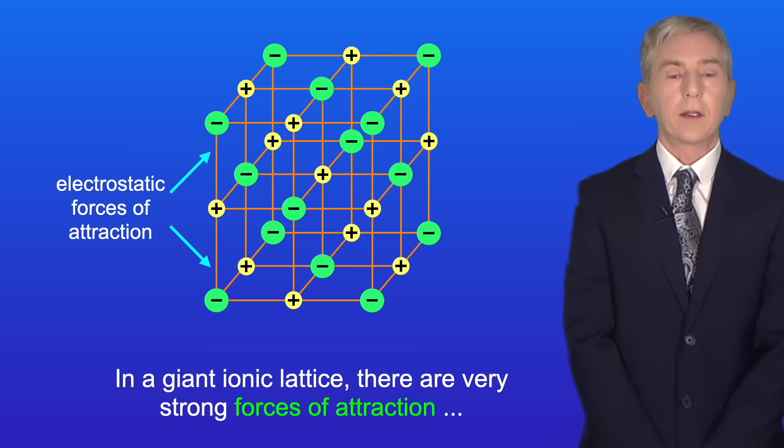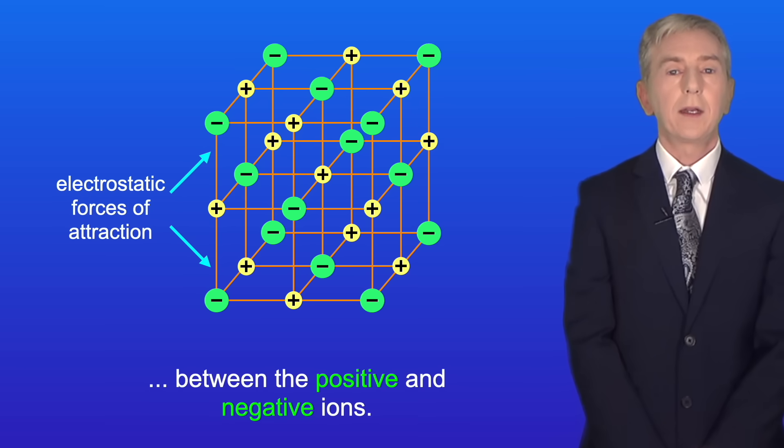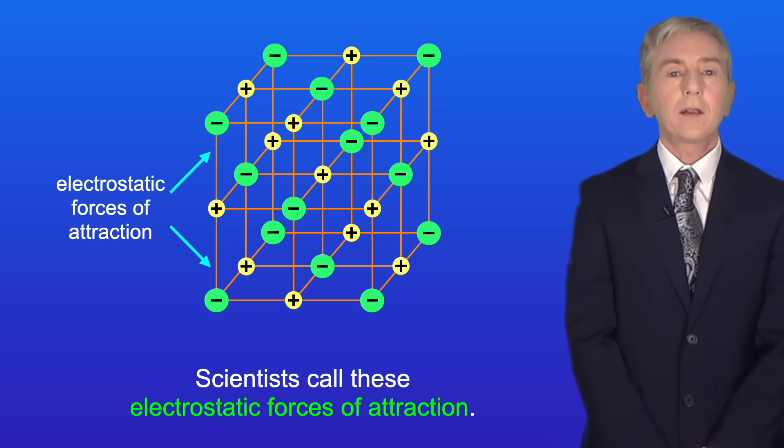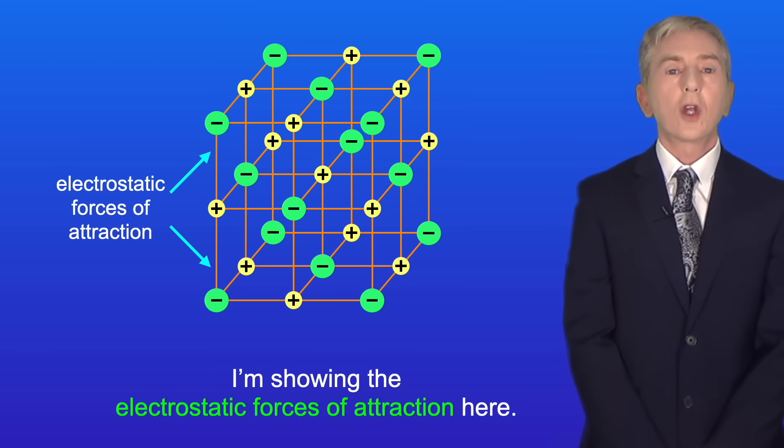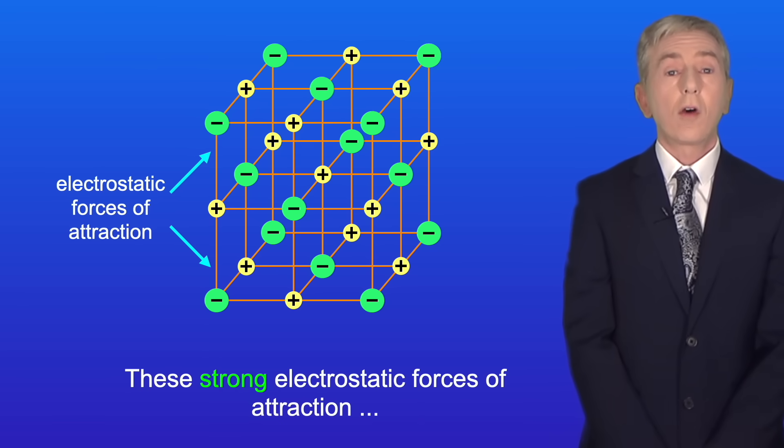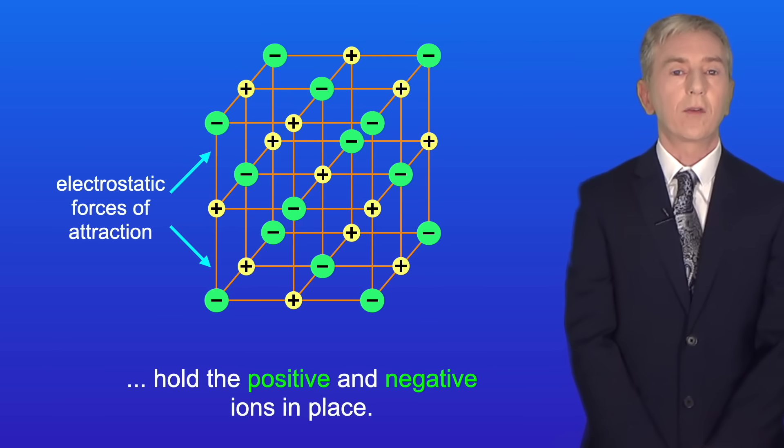In a giant ionic lattice, there are very strong forces of attraction between the positive and negative ions. Scientists call these electrostatic forces of attraction, and I'm showing the electrostatic forces of attraction here. These strong electrostatic forces of attraction hold the positive and negative ions in place.